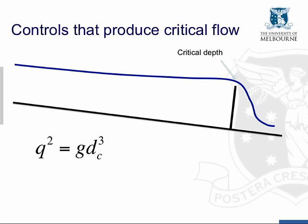We can see upstream of the weir that we have a backwater curve. As we go upstream from the weir, we approach the normal depth eventually further upstream. We go over the crest of the weir into supercritical flow. Presumably downstream there will be a hydraulic jump and a return to subcritical flow conditions.